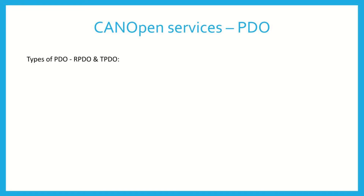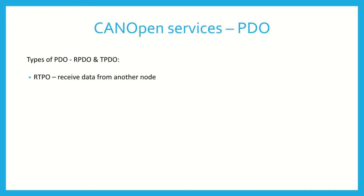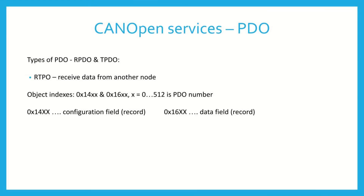determining whether the object is intended for data read or data write. For example, for a position encoder sensor, its Transmit PDO will carry data about the relative angle of its shaft. The Receive PDO resides at indexes starting from 0x1400, and the features of the PDO reside at indexes starting from 0x1600. Let's call these indexes a configuration field, because it contains the configuration of the PDO — for example, the COB-ID used by the PDO.